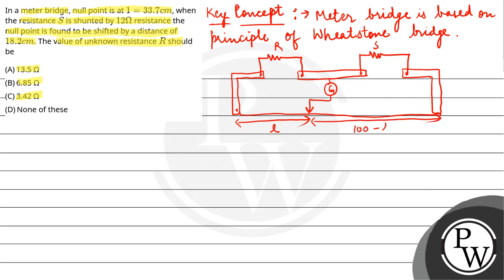the rest of the portion will be 100 minus L. 1 meter means 100 cm, so 100 minus L. This is centimeter in L. So here the ratio is R by S equals L upon 100 minus L.